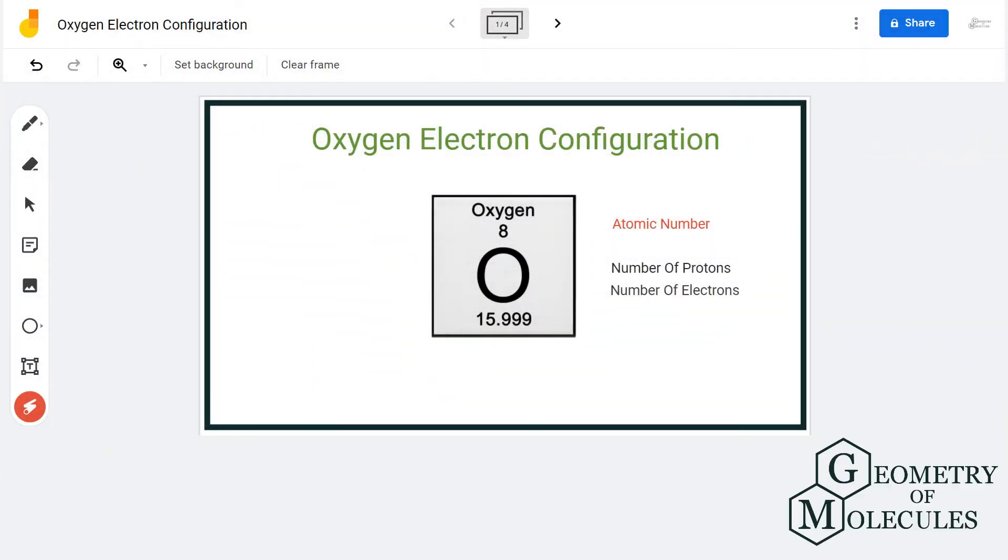Hi guys, today in this video we are going to look at the electron configuration for oxygen atom. To understand or to know the electron configuration of any given atom, we have to first look at its atomic number, followed by the total number of valence electrons, and then look at the electron configuration chart to get the final electron configuration of the atom.